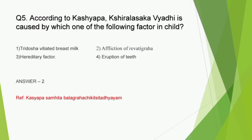Question number 5: According to Kashyapa, Shira Alasagavyadhi is caused by which factor in a child? The correct answer is option 2, affliction of Revatigriha. Kashyapacharya has listed a set of diseases caused due to affliction of Revatigriha and Shira Alasaga is one among them. When we look into option 1 - Tridosha Vitiated Breast Milk - Tridosha Dushta Stanya causing Shira Alasagavyadhi is the opinion of Vagbhatacharya, as mentioned in Ashtanga Hridaya Uttarasthana Balamaya Pratiashedha.